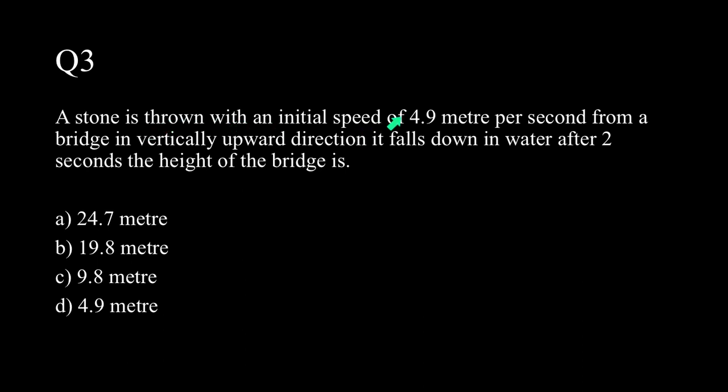A stone is thrown with an initial speed of 4.9 meters per second from a bridge in vertically upward direction. It falls down in water after 2 seconds. The height of the bridge is.